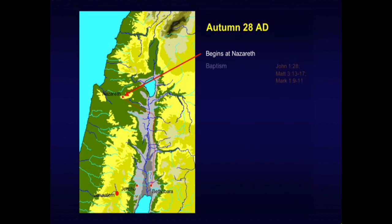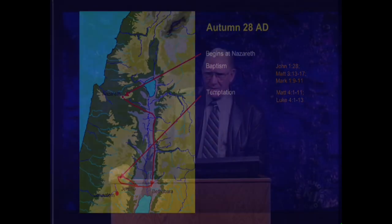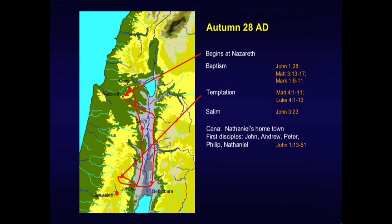We begin at Nazareth and go down to Bethabara — 'the house of passage.' The baptism took place on that side of the Jordan, as found in John 1, Matthew 3, and Mark 1. From there we go to the Mount of Temptation in chapter 4. Notice where Jerusalem is with respect to Bethabara — about 20 miles. That's a long walk if you're living in Jerusalem and want to find out what this guy is doing in the Jordan. Then up to Salem according to John, then to Cana — Nathanael's hometown — where the first disciples John, Peter, Andrew, Philip, and Nathanael are selected in John chapter 1.